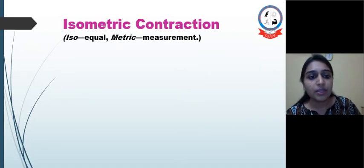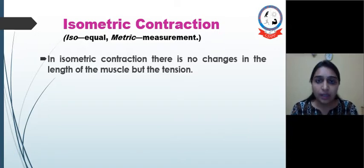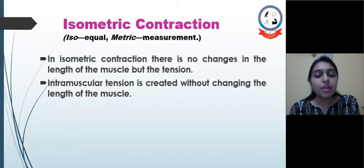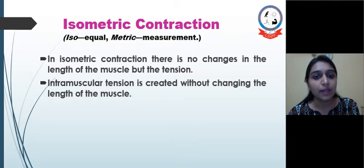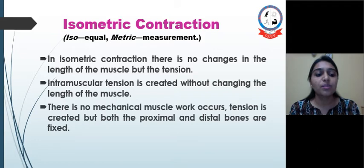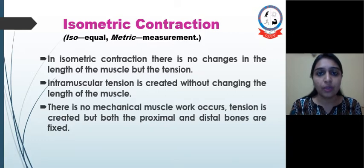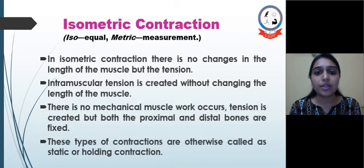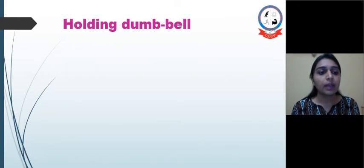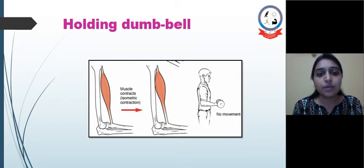Isometric contraction: iso means equal and metric means measurement. In isometric contraction there is no change in length, but muscle tension changes. Intramuscular tension is created without changing the length of the muscle. There is no mechanical work occurring. Tension is created but both proximal and distal bones are fixed. We cannot see any visible movement like lifting or lowering a dumbbell, but there will be generation of muscle tone. These contractions are also known as static or holding contractions. The example is holding a dumbbell — not moving it upward or downward, but holding it in any position.